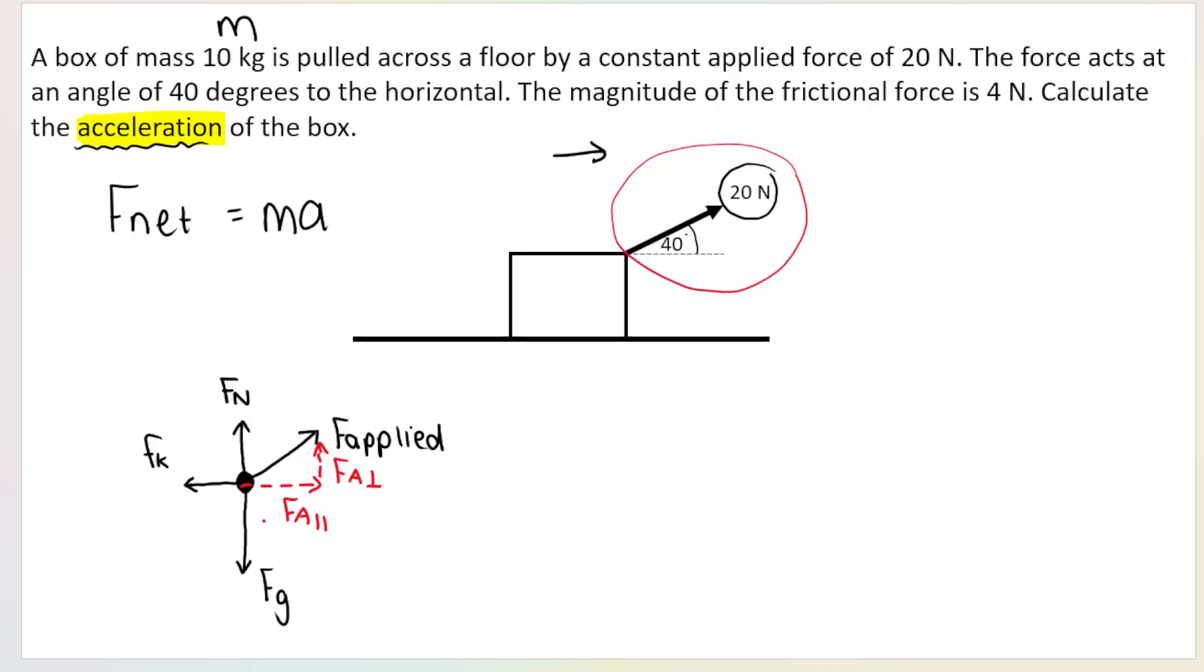Now, sometimes my students ask me, ma'am, how do I know which way the component arrows should point? Well, if applied force, F applied is going up and to the right, then my components must go up and to the right. So up and to the right, because together up and to the right gives me this one that goes up and to the right.